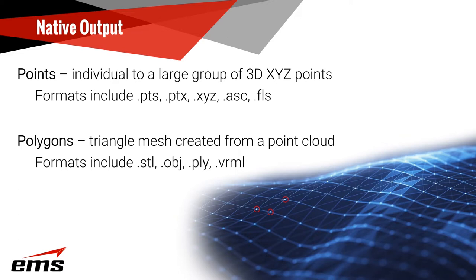All scanners natively collect points — basically just 3D points in space as XYZ values — usually output in formats like PTS, PTX, XYZ, ASC, FLS, and other formats. Some 3D scanning software can then convert those point clouds into what we call polygons or triangles. You'll hear the words polygon mesh and triangulated mesh interchanged. The mesh is basically a three-sided triangle filling in those points with a face and a normal vector, typically in formats like STL, OBJ, PLY, and VRML.